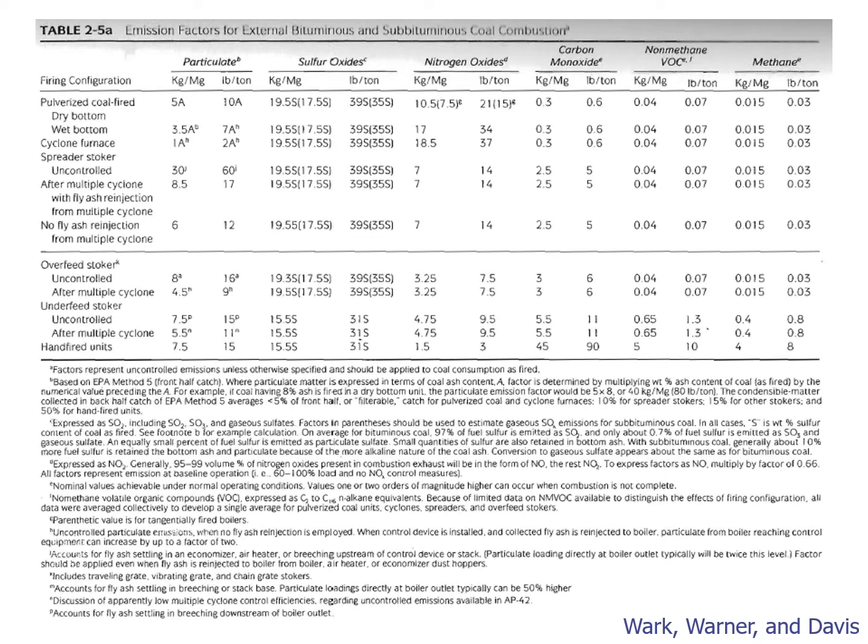This table shows an excerpt from AP-42, its emission factors for external bituminous and subbituminous coal combustion. So for example, I talked about a pulverized coal-fired boiler, and we were interested in figuring out the emission factor for sulfur oxides. I was doing this in units of pounds per ton. And you can see that for all these different pulverized coal-fired boilers, my emission factor is 39 times S. And if I go down and read the footnotes, I could see that the S stands for the weight percent of sulfur in the coal, and that sulfur oxides here is mainly SO2. If you look at the columns across the top here, there's also emission factors for particles, nitrogen oxides, carbon monoxide, non-methane volatile organic compounds, and then methane.